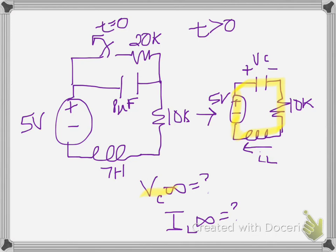We're looking for what is V_C, the voltage across the capacitor at time infinity, and what is I_L, the current through the inductor at time infinity, based on the sign conventions given here. Well after time infinity, we know that the inductor is going to become a short circuit, and this capacitor is an open circuit, so no current is going to flow through the capacitor. There's only one path now, so that means no current flows through the inductor either. So I_L at time infinity is zero.